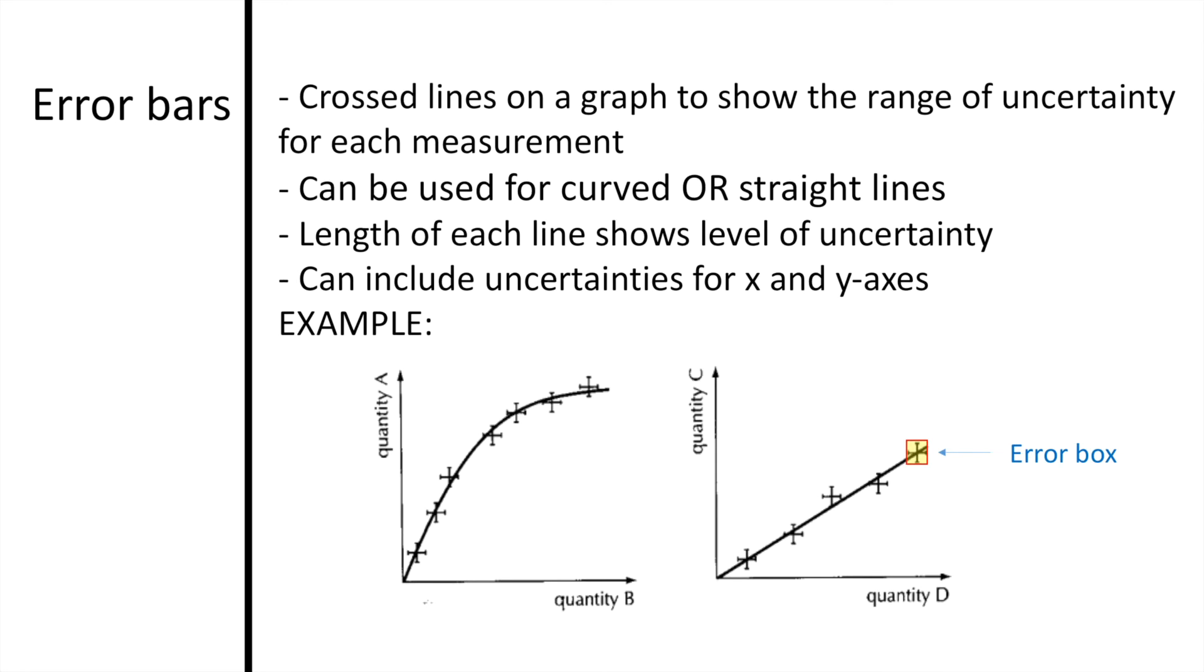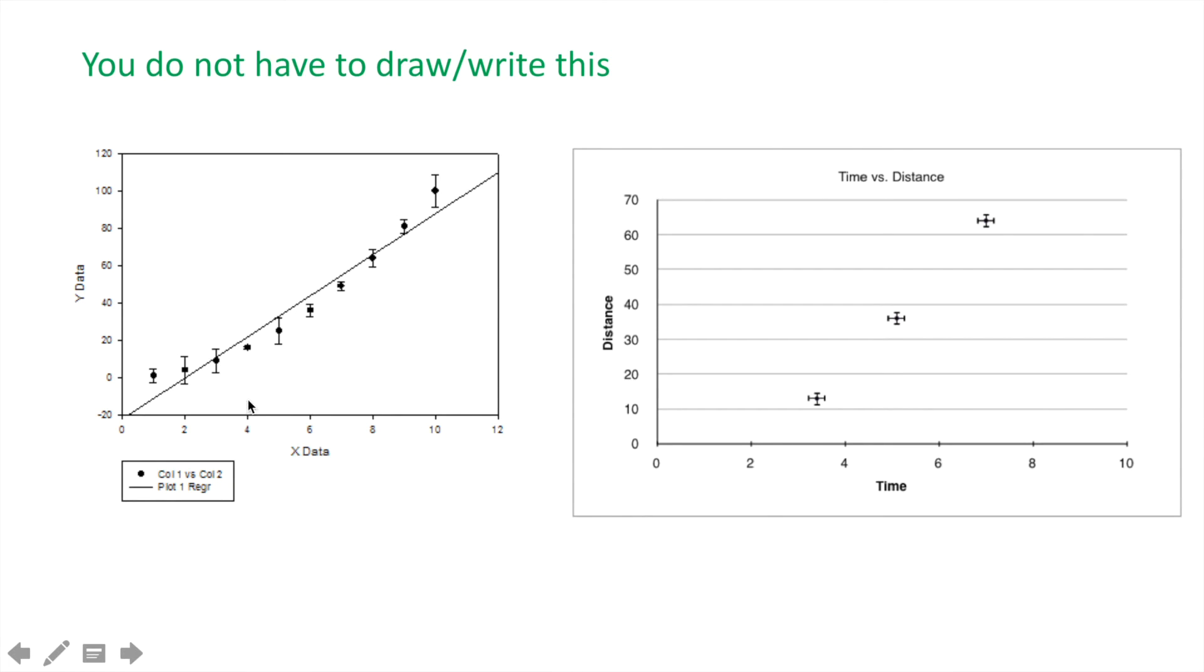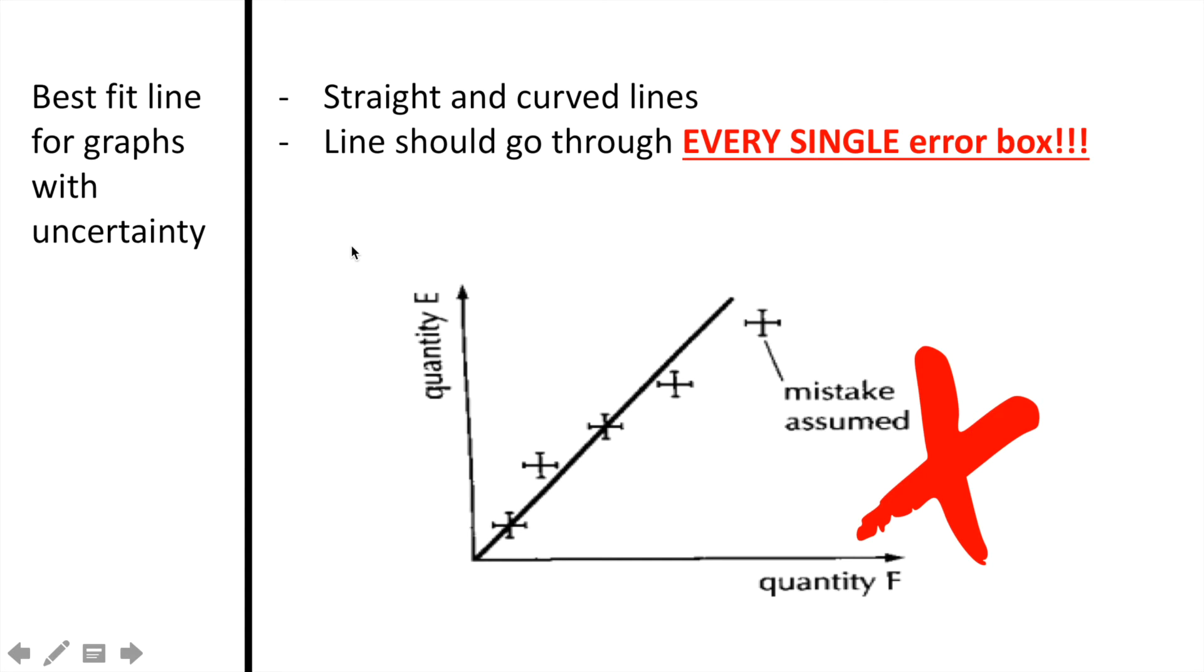The length of each line shows the level of uncertainty for that x- or y-value. The last thing to know is that you may see error bars for one or both axes, depending on the scale of the graph and how small the uncertainty is. On the left here, you see error bars that are only given for the y-values. On the graph to the right, you see error bars on both the y-values as well as the x-values.